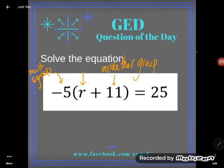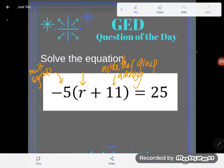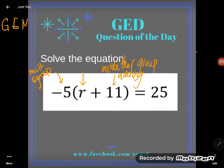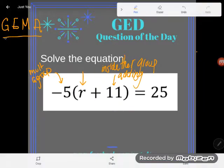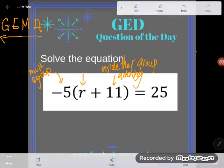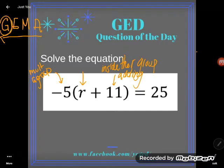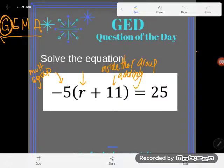When you are solving, you're supposed to work the order of operations backwards. The order of operations is groupings, exponents, multiplication and its inverse, and addition and its inverse. We work it backwards, which means we save our groups for last. So I'm going to get rid of this negative five that's outside of the group first.